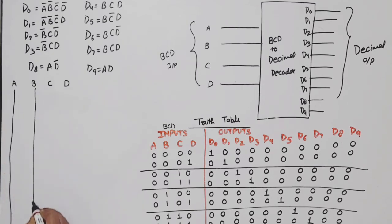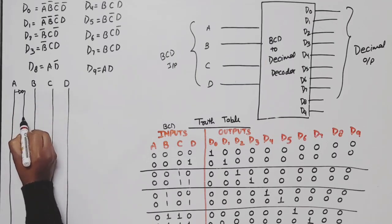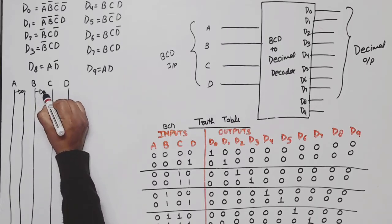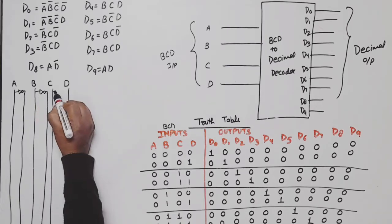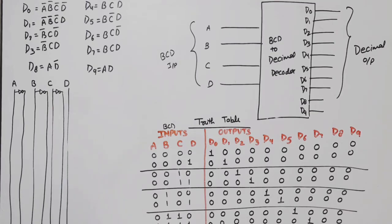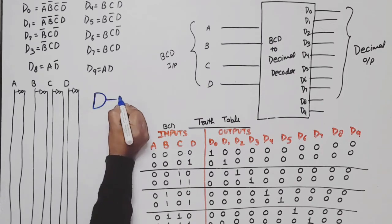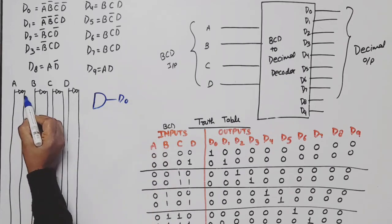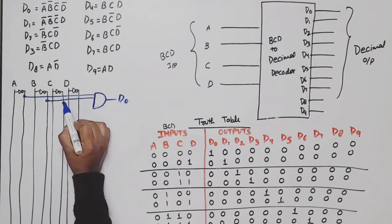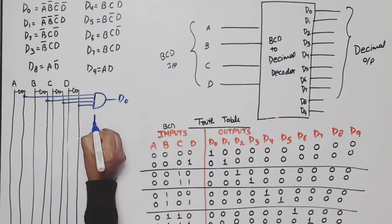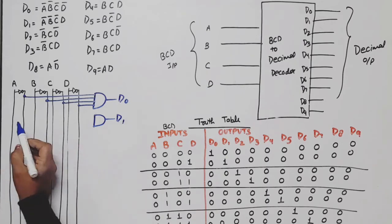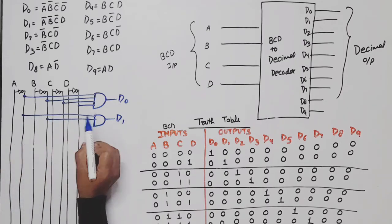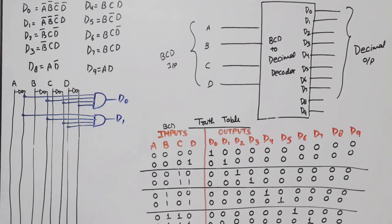Now we draw the logic circuit. We have lines for A, B, C, and D as inputs. Through NOT gates we get A-bar, B-bar, C-bar, and D-bar. For D0: D0 equals A-bar·B-bar·C-bar·D-bar — so it is a 4-input AND gate with A-bar, B-bar, C-bar, D-bar. For D1: D1 equals A-bar·B-bar·C-bar·D — a 4-input AND gate with A-bar, B-bar, C-bar, and D.